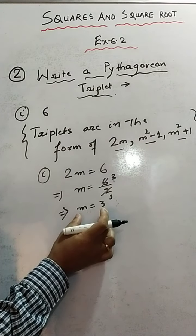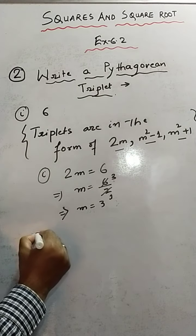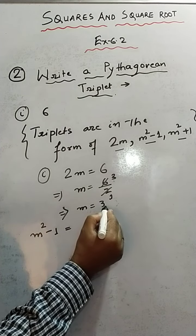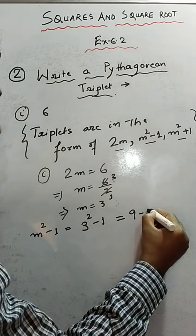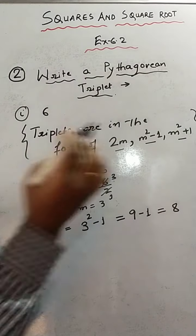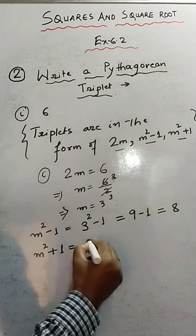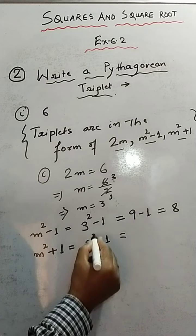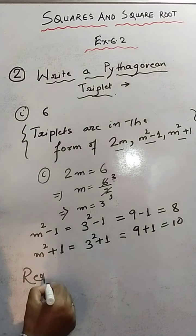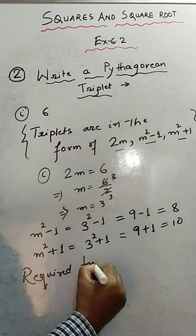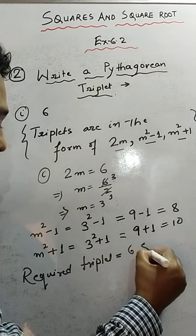Now that we know m = 3, we can find the other two numbers. m²-1 = 3²-1 = 9-1 = 8, so 8 is the second number. m²+1 = 3²+1 = 9+1 = 10, so 10 is the third number. Therefore, the required Pythagorean triplet is 6, 8, and 10.